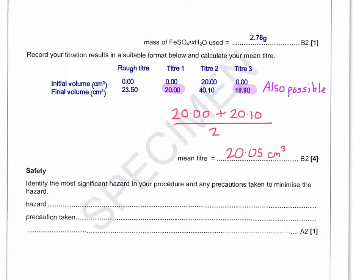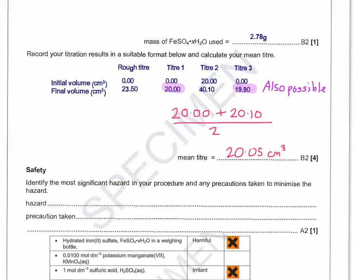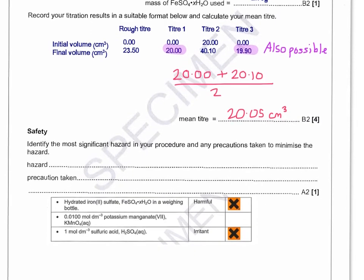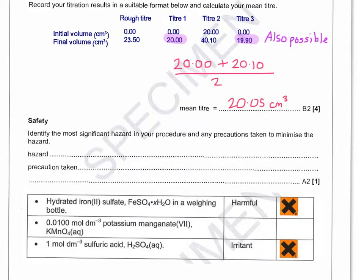So the next thing to look at is the most significant hazard in your procedure and any precautions taken to minimize that hazard. So I've brought in the hazard information from the previous page. So we can just bring that down a bit and make it a bit bigger. So there's two possible ones you could choose here. Definitely don't worry about the potassium manganate as being the most significant hazard in your procedure.